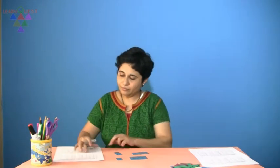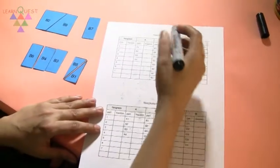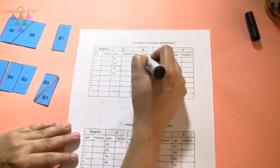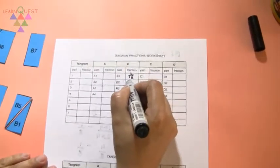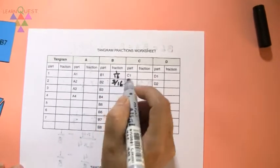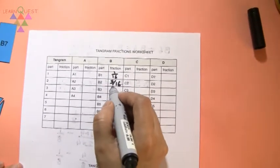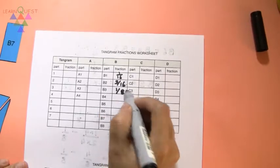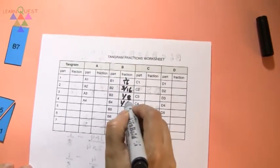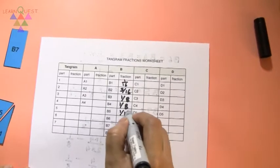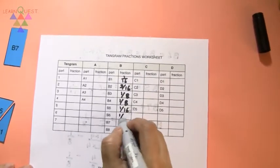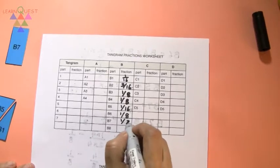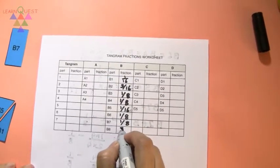There I have got the fractional value of all the pieces. Now I will write this down in the worksheet. B1 is 1/16, B2 is 3/16, B3 is 1/8, B4 is 1/8, B5 is 1/16, B6 is 1/8, B7 is 1/8, and B8 is 3/16.